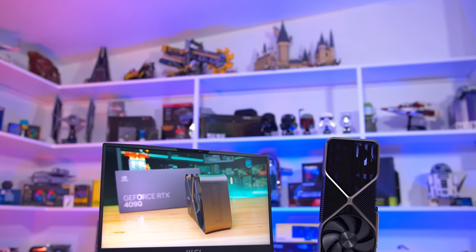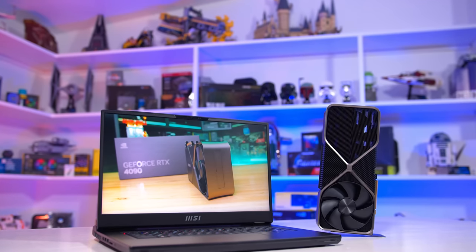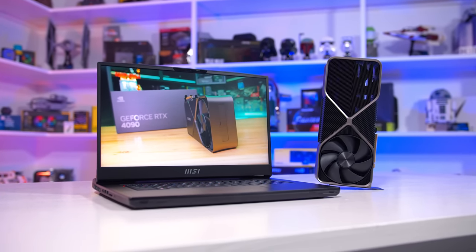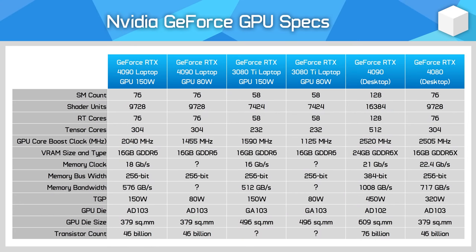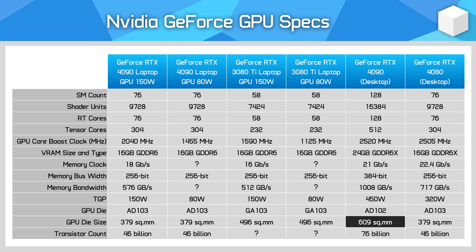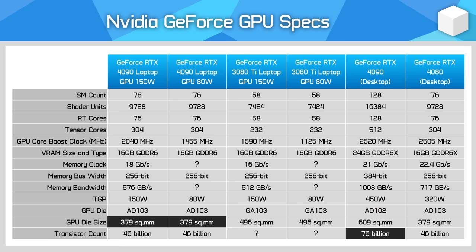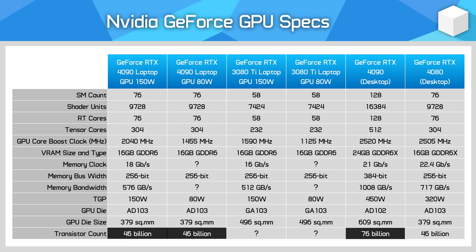Without even looking at performance, it's readily apparent merely from the spec sheet that the RTX 4090 desktop and laptop variants are vastly different. It goes right back to the very GPU die itself. The desktop card uses AD102, an impressive 609mm² die with 76 billion transistors. The laptop model uses AD103, the same die as the RTX 4080, which is just 379mm² in size with 46 billion transistors.